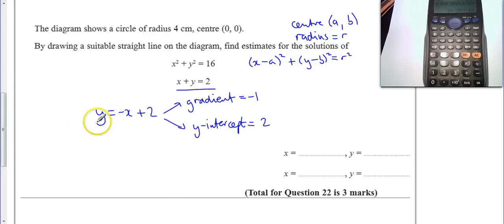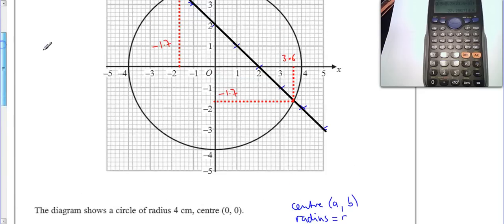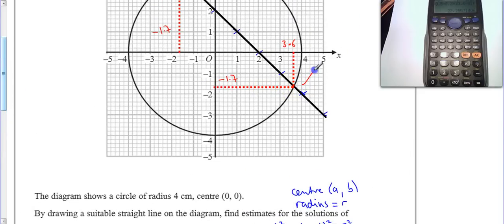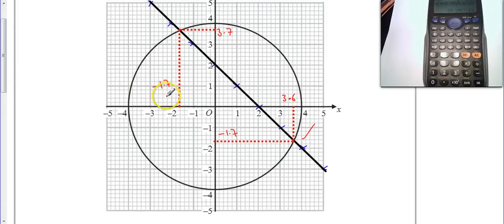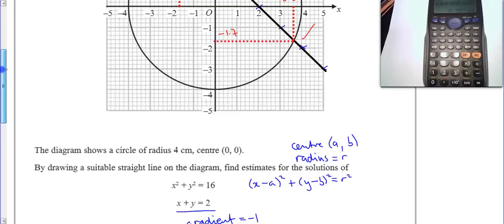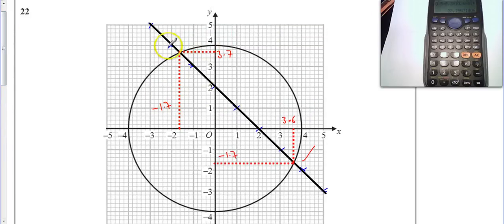So you have to read off carefully from your graph. So that means the solutions we've got, when x was 3.6 and y was minus 1.7, that was our first solution here. And then when x was minus 1.7, the y value came out as 3.7. Looking to see how accurately you can draw this line on the graph, but also how accurately you can read these off. This is one pair, this is the second one we did, and this was the first pair we did.